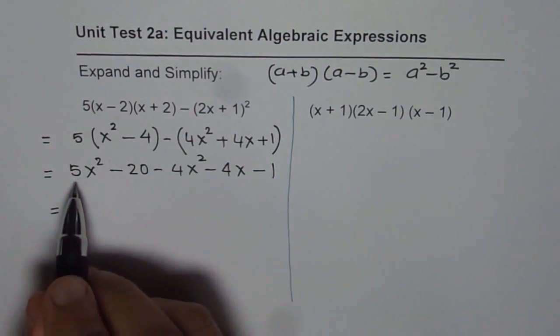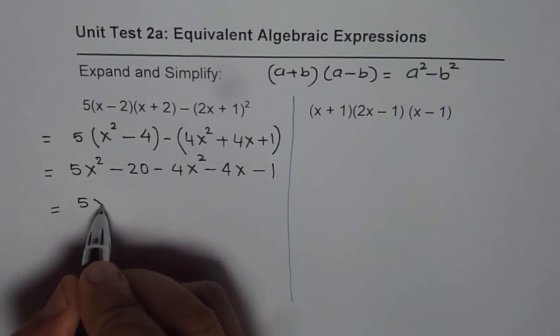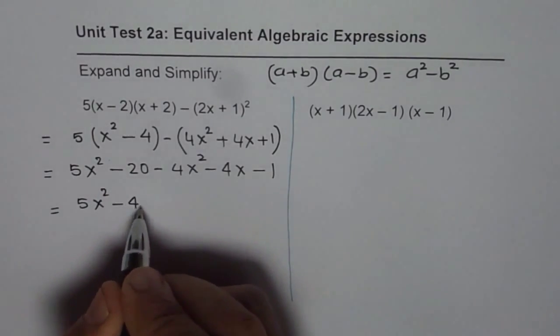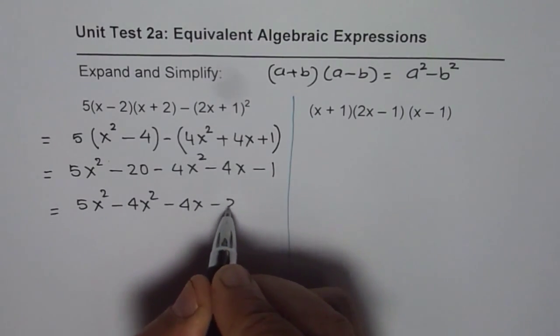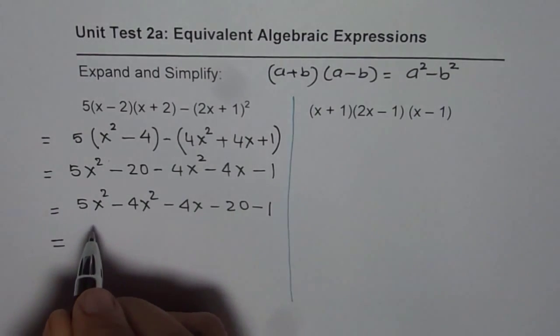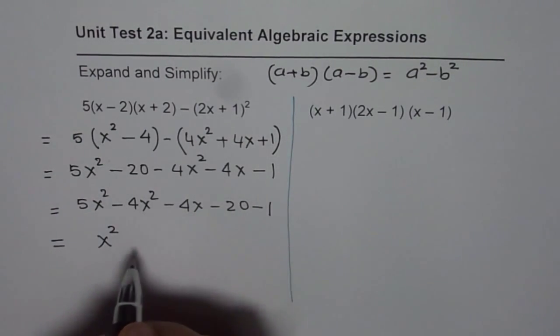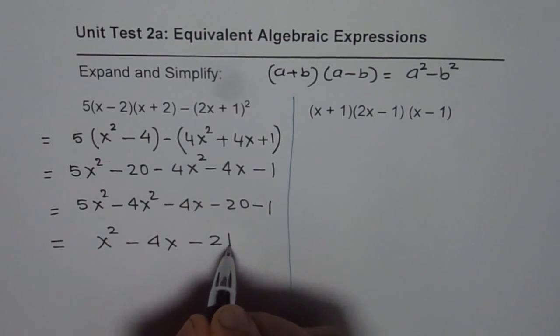Now, we'll combine the like terms. 5x² minus 4x². Let me write them together first. 5x² minus 4x². Then, we have minus 4x minus 20 minus 1. Now, let us combine them. 5x² minus 4x² is x². And then, we have minus 4x minus 21.